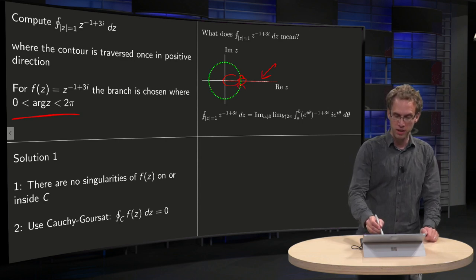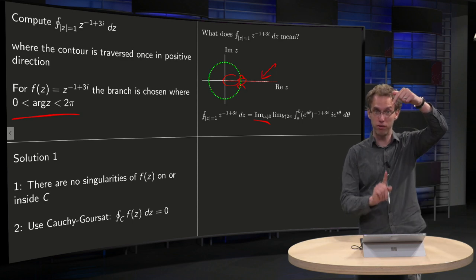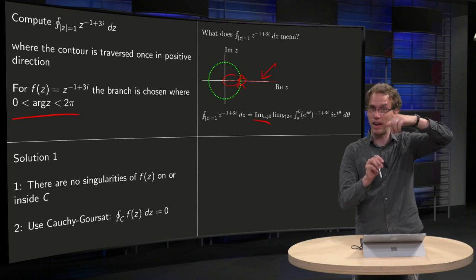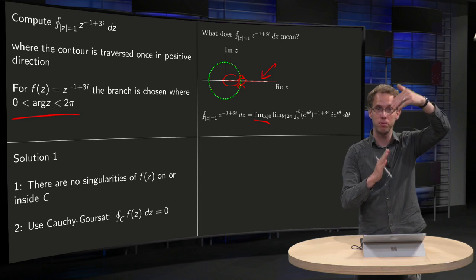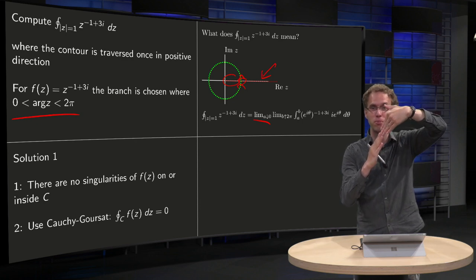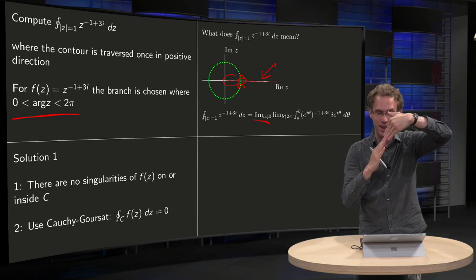So you take limits, A going from above to 0 and B going from below to 2π. So A is not 0, B is not 2π, but you just take the limits. So you do not cross the branch cut, you don't get there.